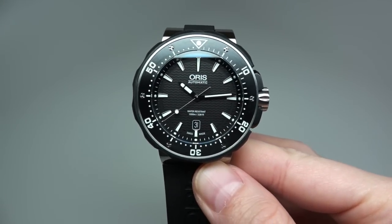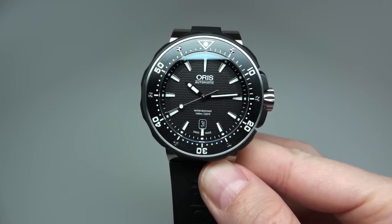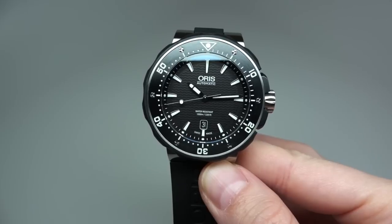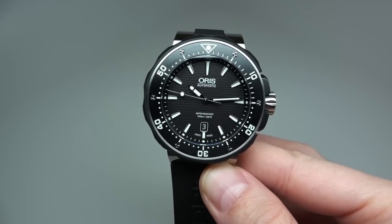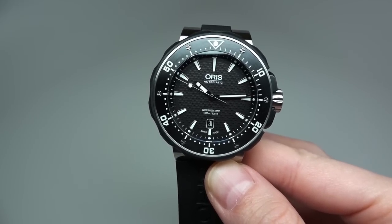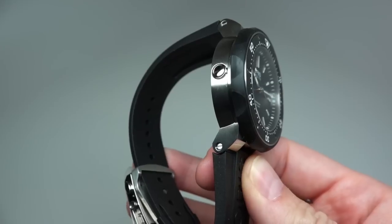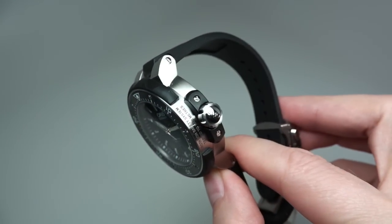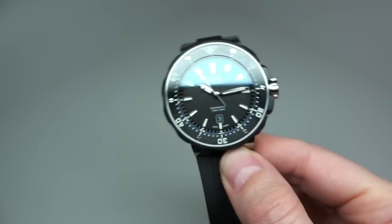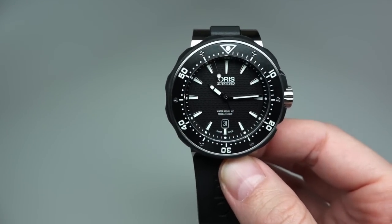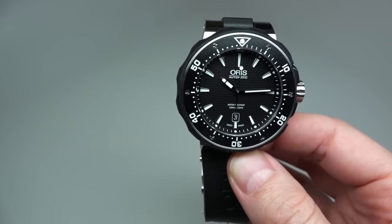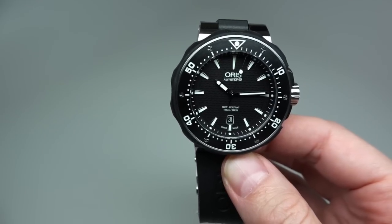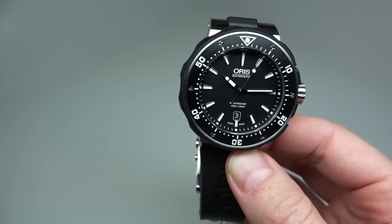So this is Oris Pro Diver self-winding movement man's watch. Retail price for this model, $2,850. The best online store price I can find is $1,399. It's very temporary price, not always you can get this price for this model anytime.